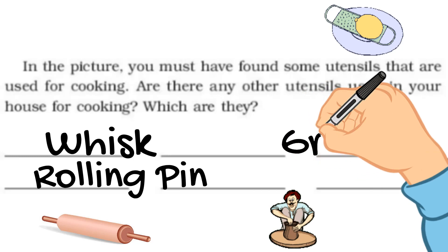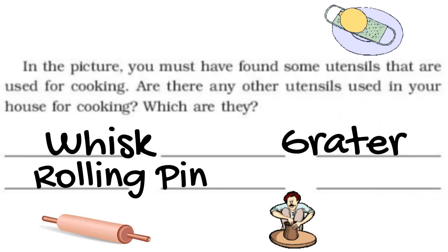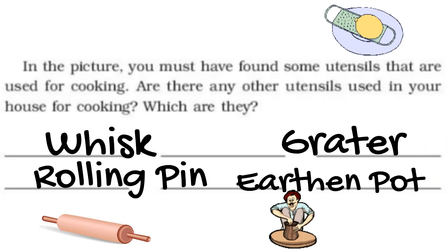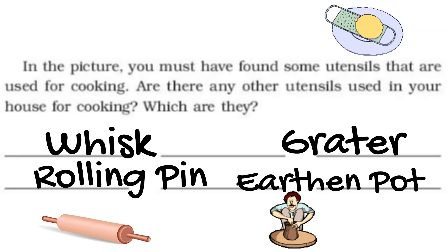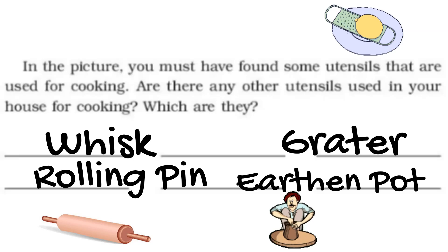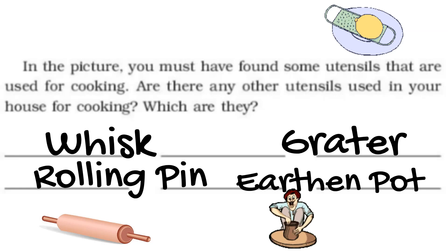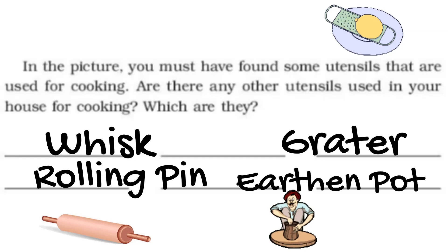Are there other utensils which you use in your house? Yes — we use a whisk for making buttermilk, to stir the curd so buttermilk can form. We use a rolling pin to make roti circular and uniform. Another tool we use in the kitchen is a grater. It has a rough surface, and if we rub a vegetable like carrot on it, we get small pieces. We also use small earthen pots to make curd.